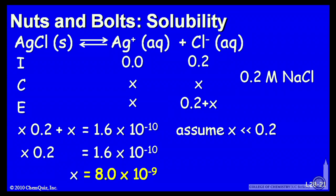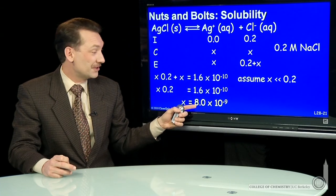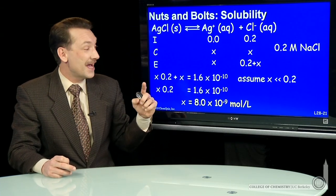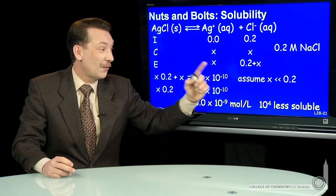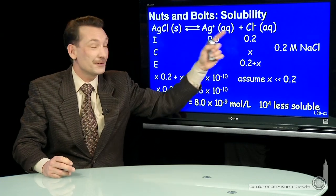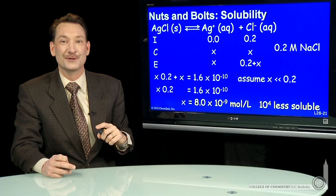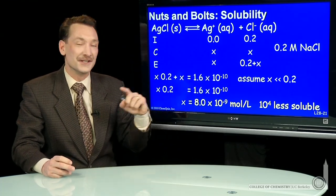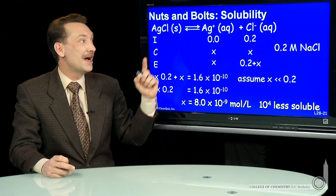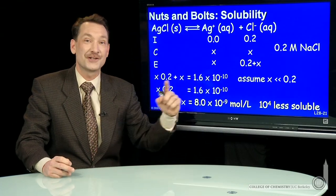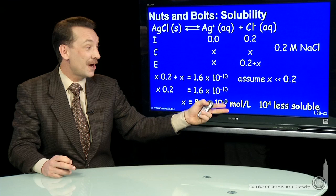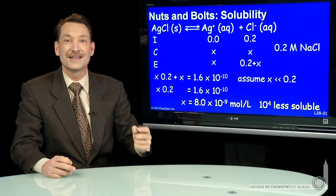So what we have is an x concentration, silver ion concentration, 8 times 10 to the minus 9. That's 10 to the fourth times less soluble than without the chloride ions in solution. So this common ion reduces the solubility of silver chloride by a factor of 10 to the fourth. That's the common ion effect. And this is how we do common ion effect calculations.